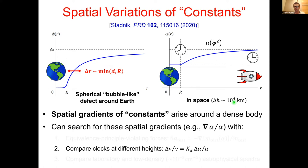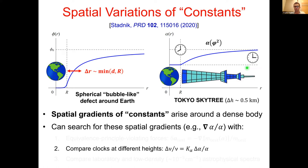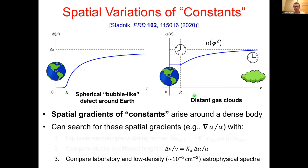Space-based measurements are expensive and difficult, so we can also use state-of-the-art optical clocks in a ground-based setting, taking advantage of height separations in very large structures. A very good experiment was recently conducted by Professor Katori's group in Tokyo, using a pair of strontium optical clocks separated by a height difference of about half a kilometer in Tokyo's Sky Tree. Another idea is to compare atomic and molecular transition frequencies in the laboratory with those in distantly separated astrophysical gas clouds.